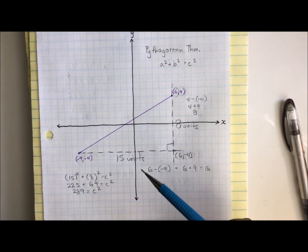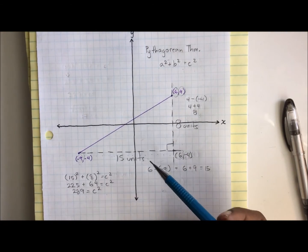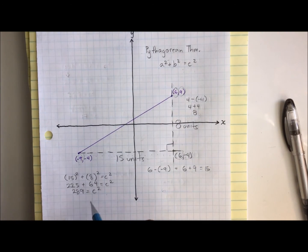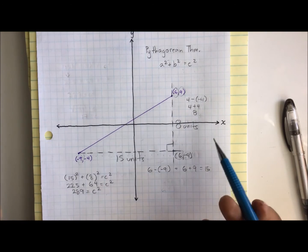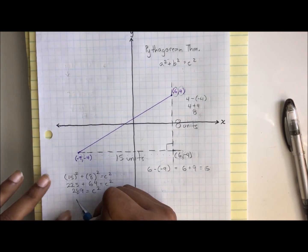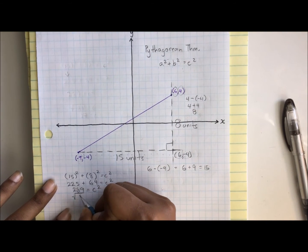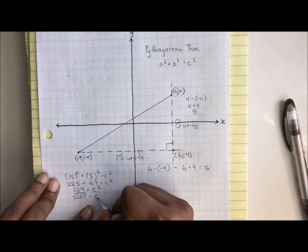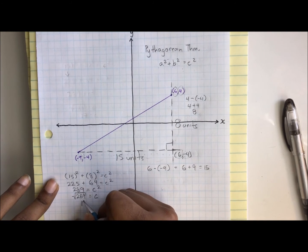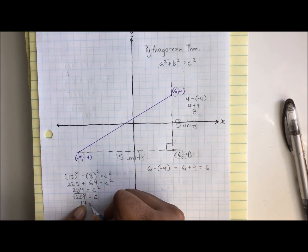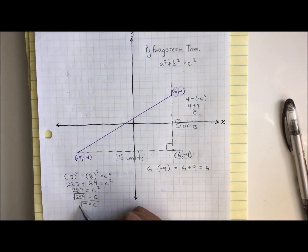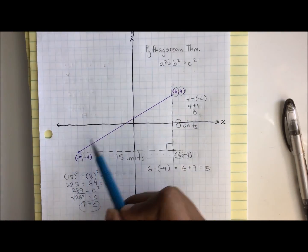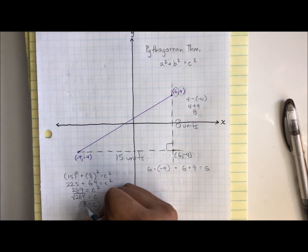Now we're trying to figure out c. c squared is an operation. When you square something, it's an operation. And when we have operations, there's always inverses. The inverse operation of squaring something is square rooting. So we're going to take the square root of both sides. We're left with square root of 289 equals c, or square root of 289 is 17 equals c. So we have the length of our hypotenuse or distance between these two points. It's going to be 17 units.